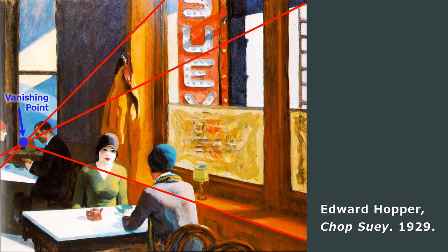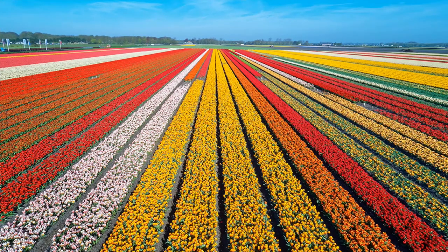For our inspiration, we'll be looking at these tulip fields in Holland. Holland, also called the Netherlands, is a country in Europe known for its tulips, windmills, art, trade, and culture. The country is very flat. There are not many mountains.